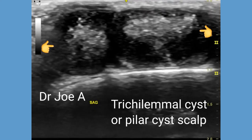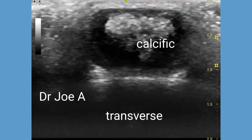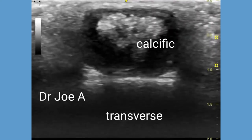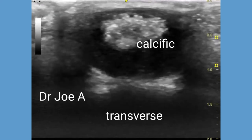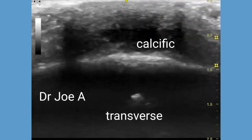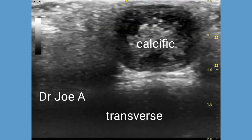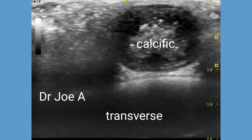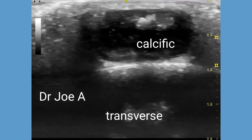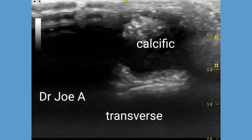A trichilemmal cyst, or pilar cyst, is almost always benign. This must be differentiated from a sebaceous cyst in that this cyst does not have a punctum. A sebaceous cyst, by contrast, originates from the sebaceous gland of the scalp.